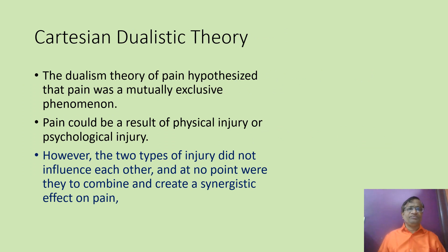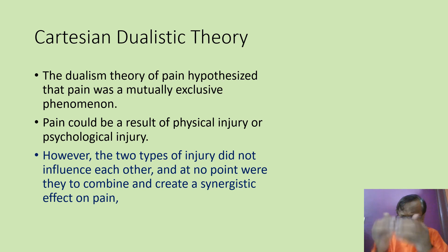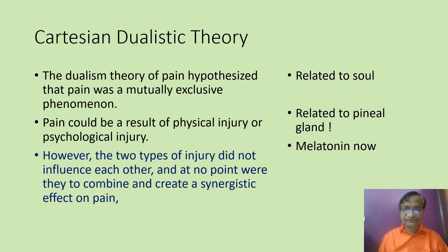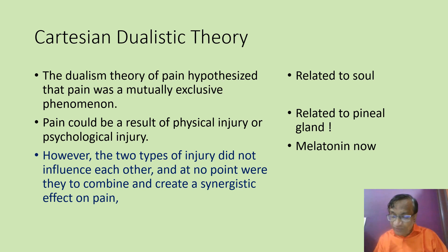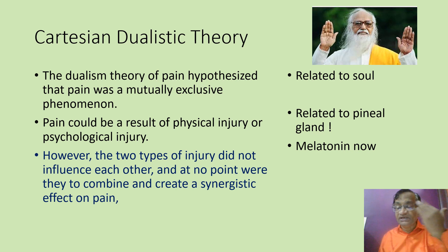The Cartesian dualistic theory said pain was a mutually exclusive phenomenon — it could result from either physical injury or a psychological injury, but not a combination. He said it cannot cause a creative additive effect; it is either physical or psychological, but not synergistic. He also related pain to the soul and to the pineal gland, linking it to melatonin. This is the Cartesian dualistic theory, and the pineal gland connection is a notable point.